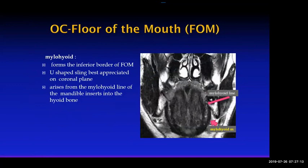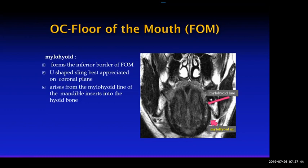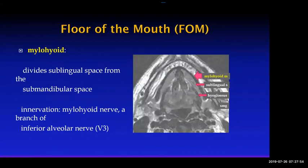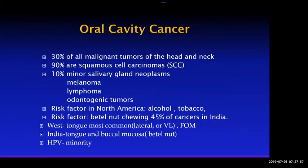The floor of mouth is essentially formed by the mylohyoid muscle, which forms a sling attaching to the mylohyoid line of the mandible. The floor of mouth is the mucosa covering the mylohyoid muscle — if you move your tongue up and feel what's below, that's your floor of mouth.